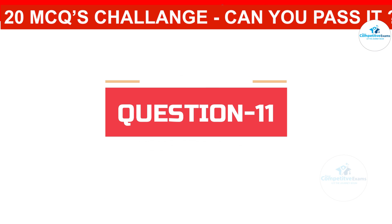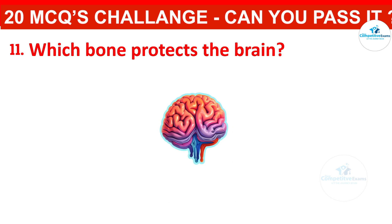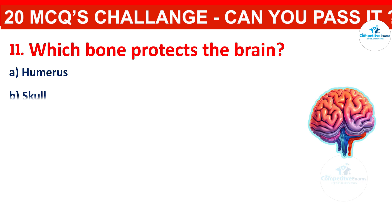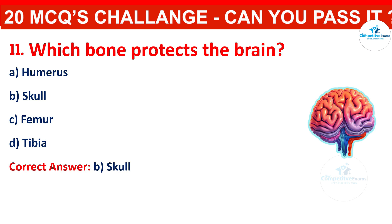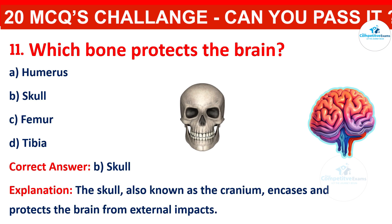Which bone protects the brain? Your options are: humerus, skull, femur, or tibia. The correct answer is skull. The skull, also known as the cranium, encases and protects the brain from external impacts.